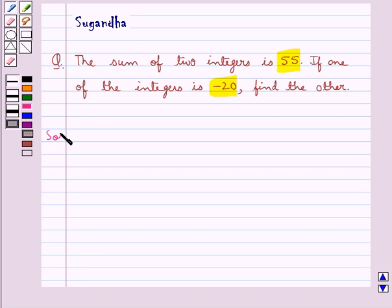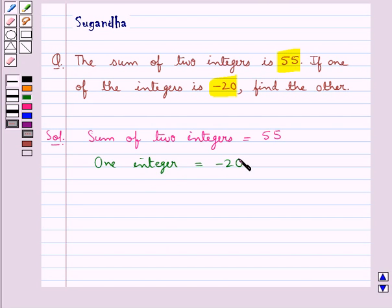Let's see the solution now. We are given that the sum of two integers is 55, and we are given one integer as minus 20. We have to find the other integer.